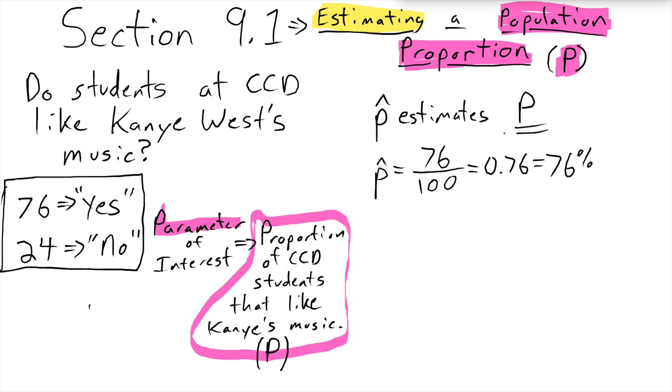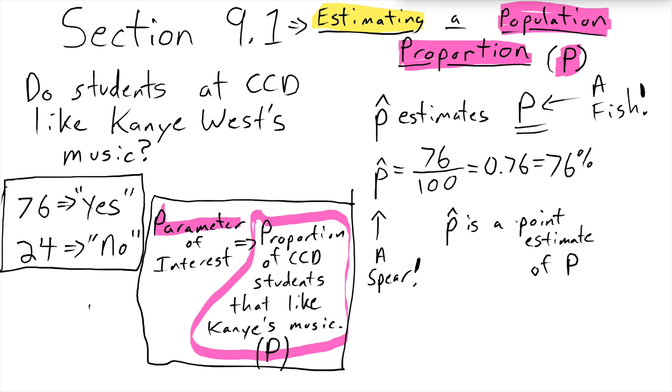So now I'm going to use an analogy here. This population proportion, this parameter of interest, this thing that's hard to know, we're going to think about that as being a fish and we want to catch this fish. And if we use P hat to estimate P because P hat is just one single value, it's like throwing a spear at this fish. It's just one number. It's one point. We call P hat a point estimate of P.